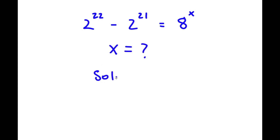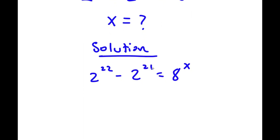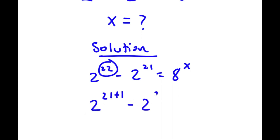For my solution, I start with 2 to the power of 22 minus 2 to the power of 21 is equal to 8 to the power of x. Now, 22 is the same thing as 21 plus 1. So I'm going to rewrite this as 2 to the power of 21 plus 1 minus 2 to the power of 21 is equal to 8 to the power of x.